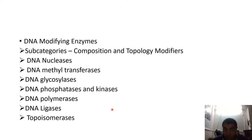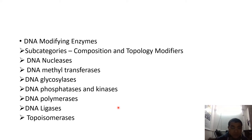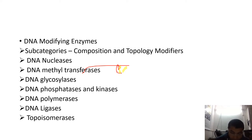Restriction endonucleases type II are the best because they specifically recognize the recognition sites. Another example is the excinuclease — a subcategory of endonuclease — which hydrolyzes two phosphodiester bonds at a time. These excinucleases play an important role in the DNA repair system, such as the ABC excinuclease in nucleotide excision repair mechanisms.